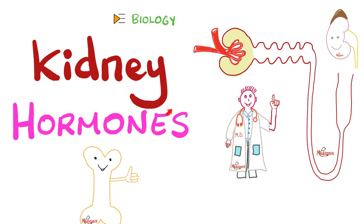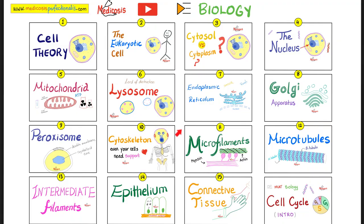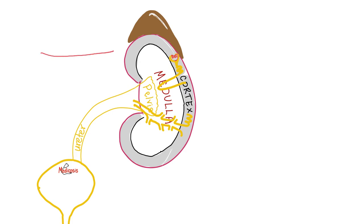Because believe it or not, your kidney is an endocrine organ too. And in that sense, the kidney resembles your pituitary gland or your thyroid gland or your pancreas. Welcome to the biology playlist. Please watch these videos in order.